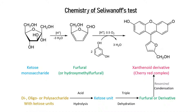Sucrose, for example, is a disaccharide containing glucose and fructose monosaccharide units. Since fructose is a ketose monosaccharide, sucrose gives a positive Seliwanoff's test as a result of the acid hydrolysis of sucrose by the reagent and subsequent dehydration and condensation reactions of the fructose component.